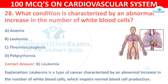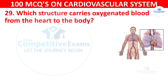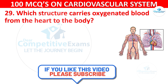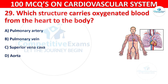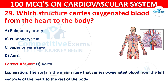Question 29: Which structure carries oxygenated blood from the heart to the body? Options are: Pulmonary artery, Pulmonary vein, Superior vena cava, or Aorta. The correct answer is D, Aorta. The aorta is the main artery that carries oxygenated blood from the left ventricle of the heart to the rest of the body.